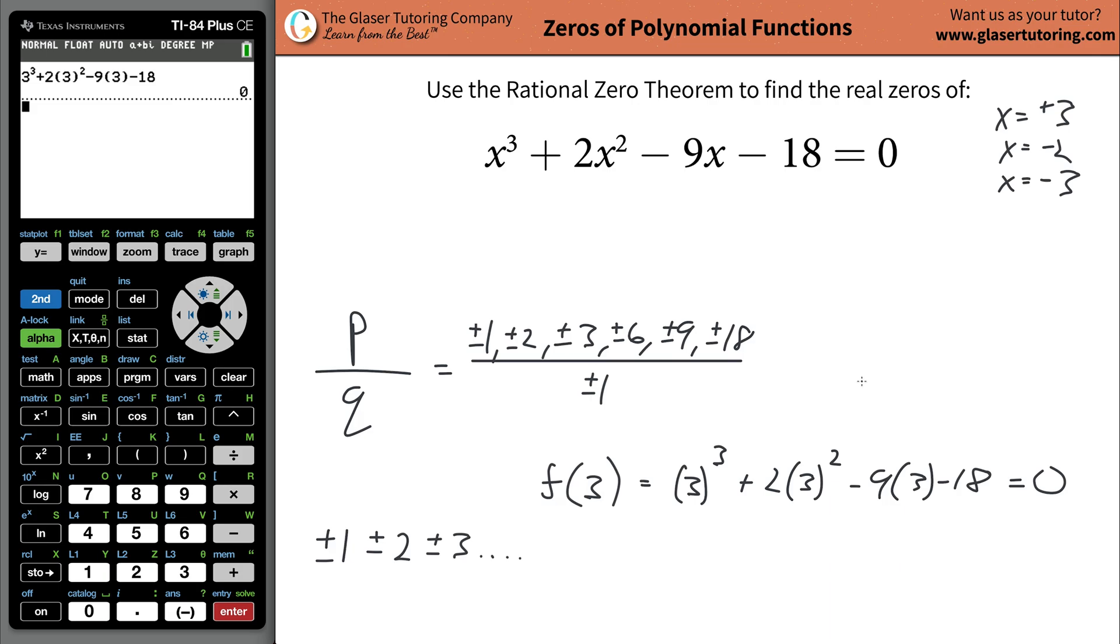So as you can see, the rational zero theorem basically tells you that you can list out all the possibilities of your zeros. But again, in this case, since we're dealing with a cubic, only three of them are going to work. So three out of 12 are going to work. Are you really going to test all 12? It's a little bit unreasonable in my opinion. But that's what you would do, that's how you would apply the rational zero theorem.